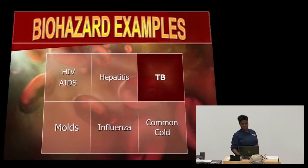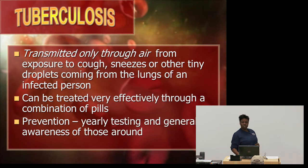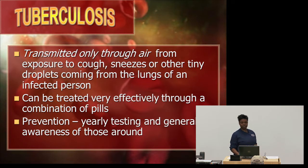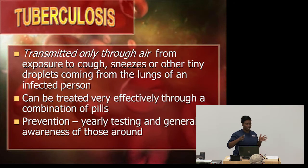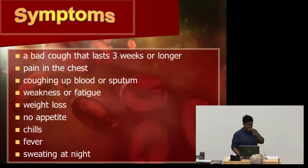Let's talk about tuberculosis, TB. Tuberculosis is transmitted only through the air, from exposure to coughs, sneezes, or other tiny droplets coming from the lungs of an infected person. It can be treated very effectively through a combination of pills — about seven pills daily, and a health agency must verify you're taking them. Prevention includes yearly testing and general awareness of those around you.